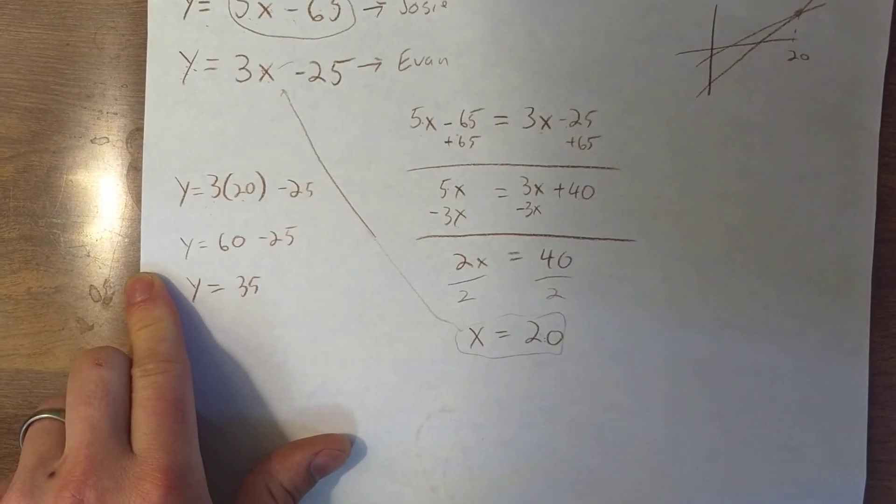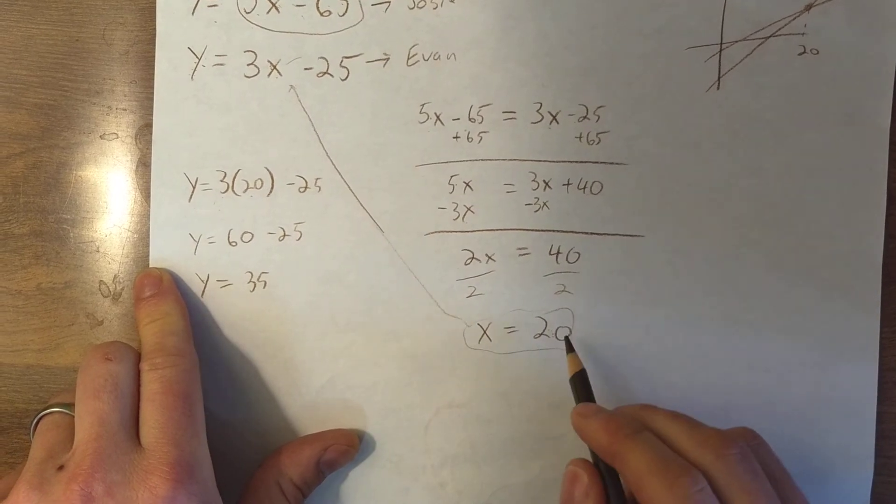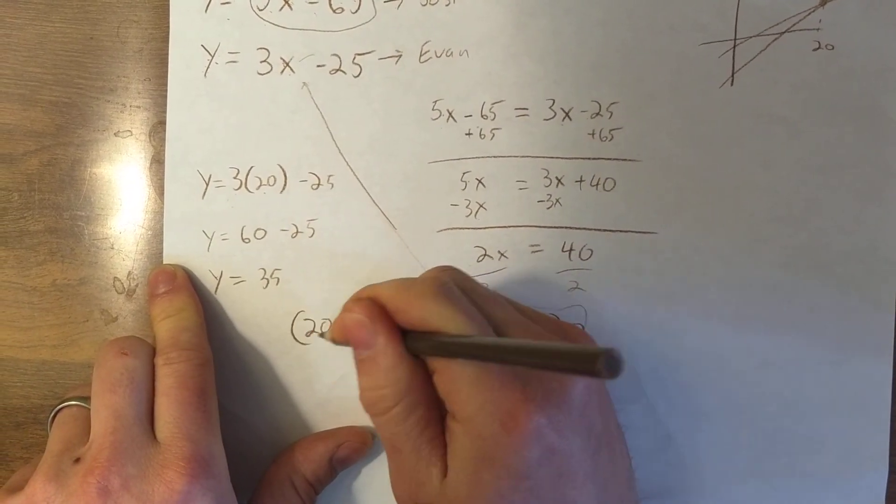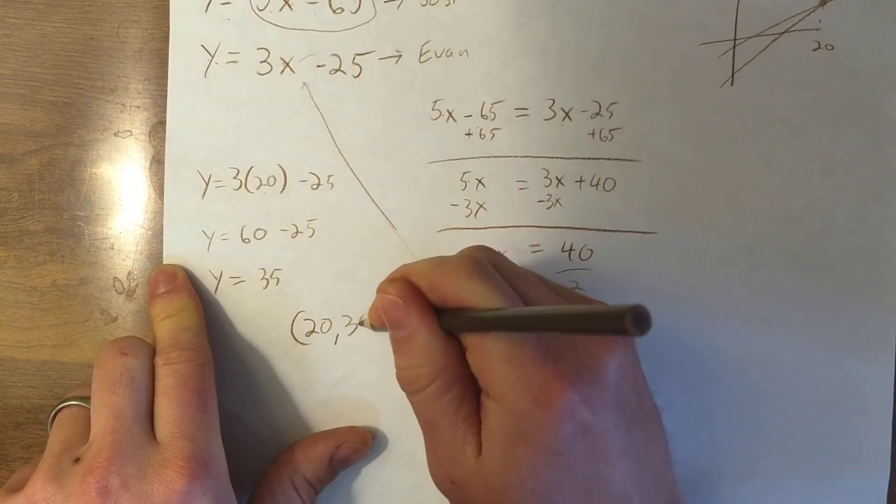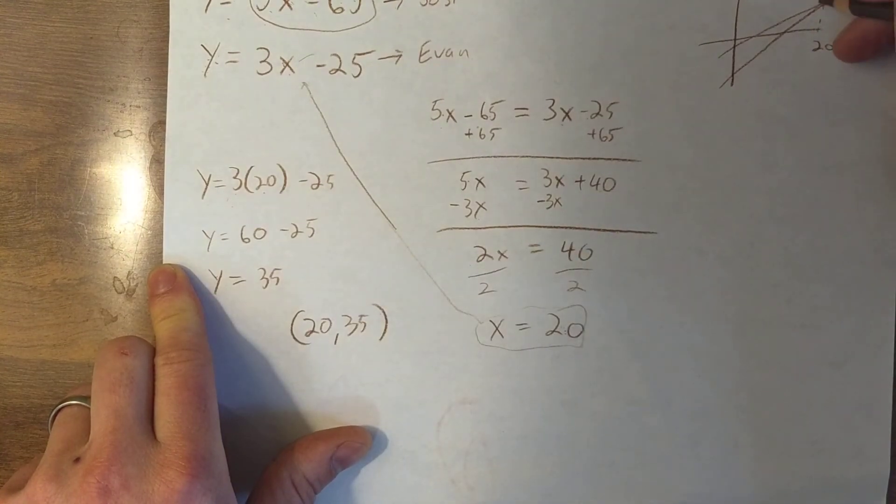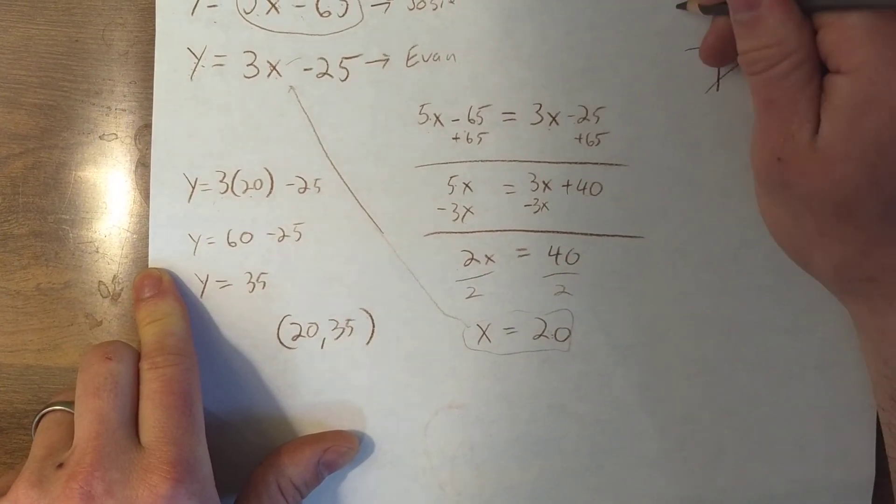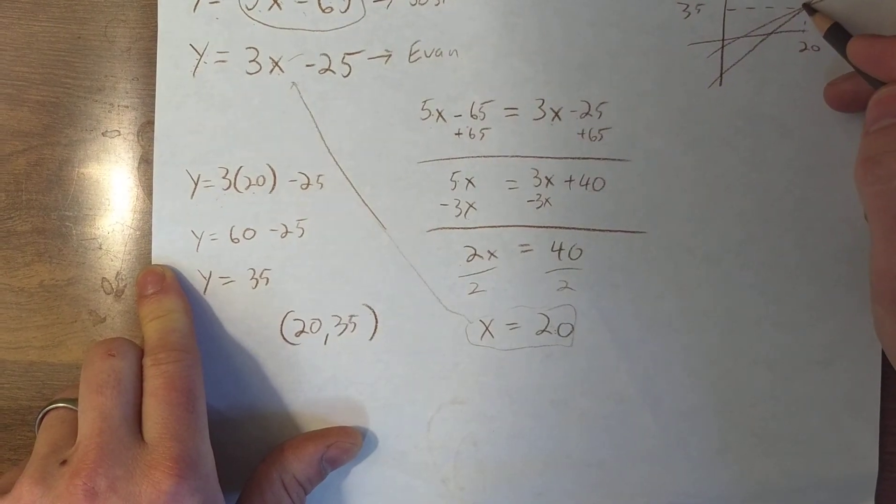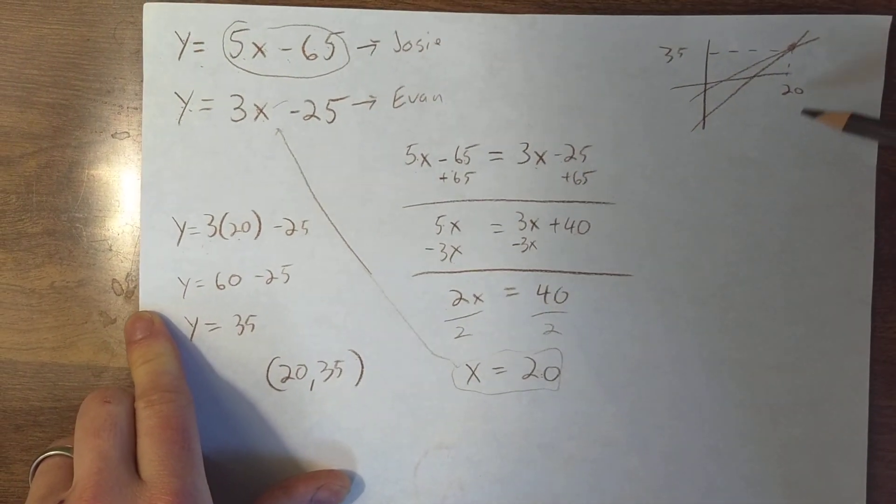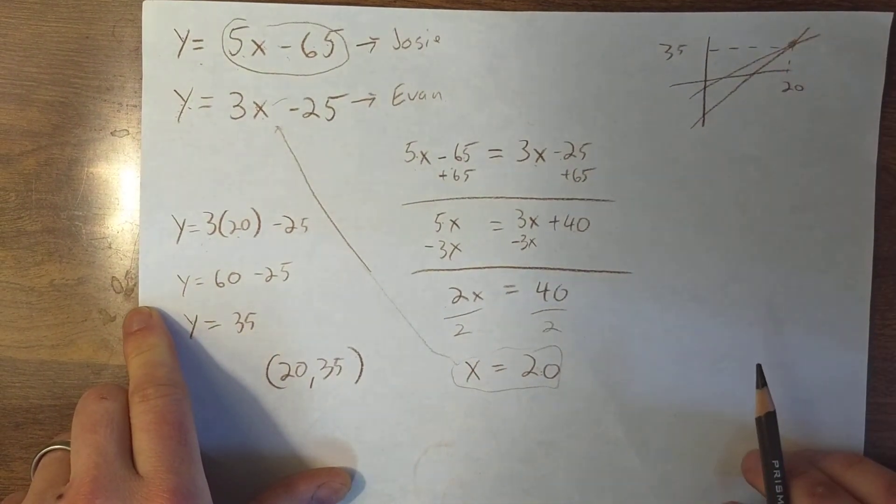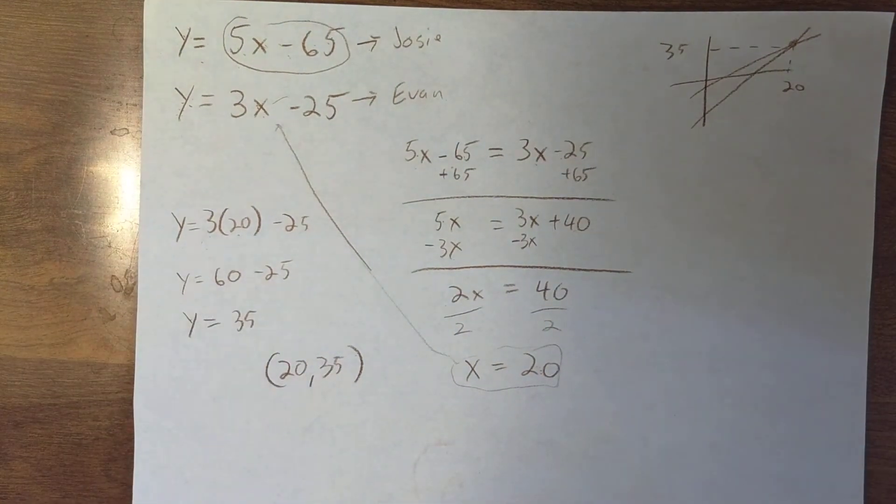Remember, my answer is going to be an ordered pair. So x is 20, y is 35. So 20, and then this over here would be 35. That's the point of intersection. And that agrees with the graph that we just showed on GeoGebra. All right, thanks for watching.